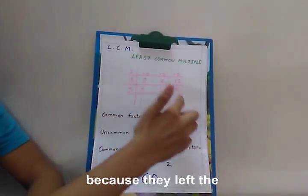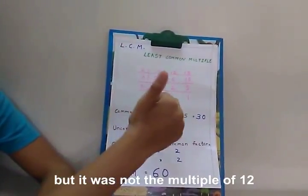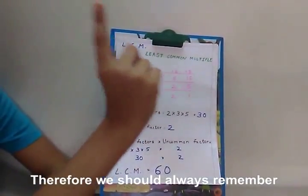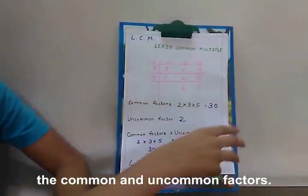Because it left 2 in the last line. Therefore, we should always remember that we should multiply the common and uncommon factors.